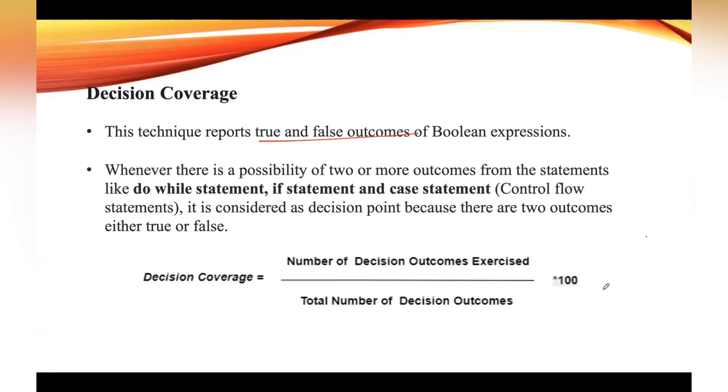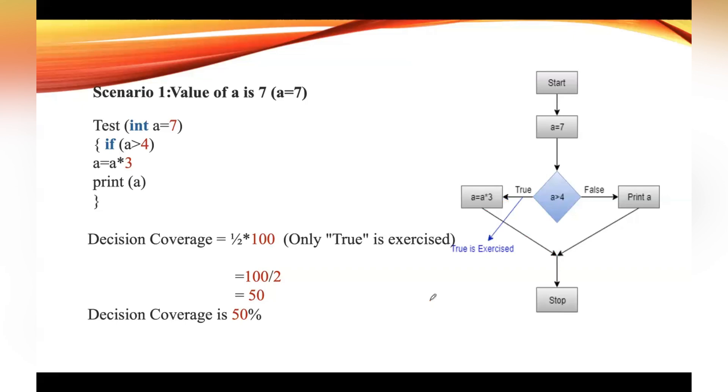Let us try to understand this with an example. Consider this code in order to apply our decision coverage technique. Here, let us assume that the value of a is 7. You can see that 7 is greater than 4, yes. So here, this is a control flow graph when the value of a equals 7.